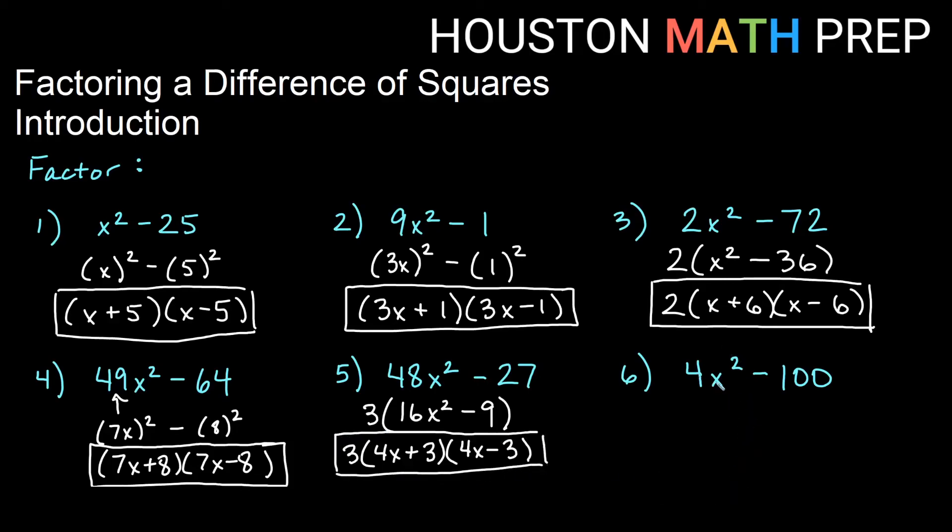Over here on this last one, 4x² minus 100. These are perfect squares. 4x² is a perfect square. 100 is a perfect square. But don't forget to look for GCF first. What we should do is notice that these are actually both divisible by 4, and we should pull the 4 out first. So we have 4 times the quantity x² minus 25.